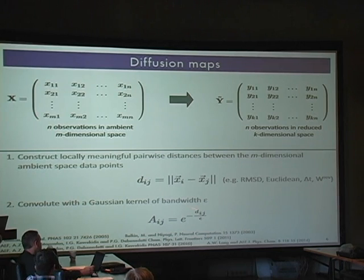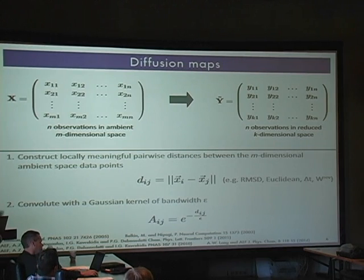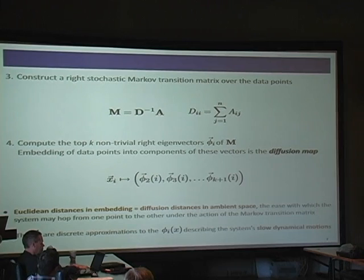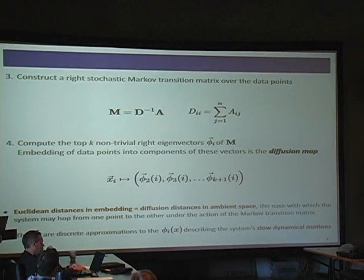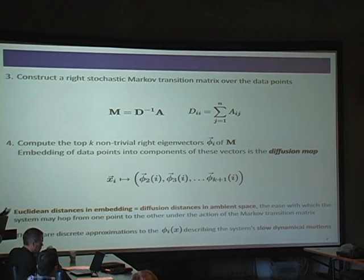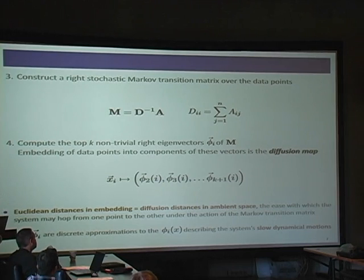We convolute pairwise distances with a Gaussian kernel of a particular bandwidth — essentially throwing away large distances and keeping the small ones, so you only see your nearest neighbors. If you row-normalize your matrix, you have a Markov matrix, which you can think of as hopping in data space — it tells you how easy it is to hop from one data point to its nearest neighbors. You then diagonalize this Markov matrix, finding its leading eigenvectors and eigenvalues, which corresponds to finding the leading modes of a diffusion process. With infinite, infinitesimally spaced data, this operation reduces to solving a Fokker-Planck equation over the manifold, and the leading eigenfunctions give you the slow modes of your diffusion process.